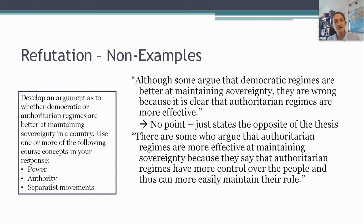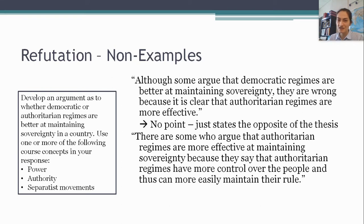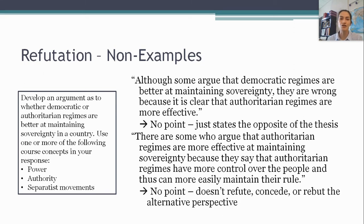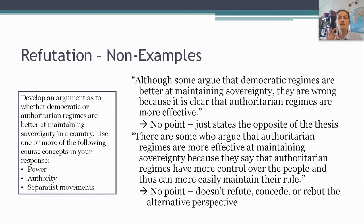Second, I might write: 'There are some who argue that authoritarian regimes are more effective at maintaining sovereignty because they have more control over the people and thus can more easily maintain their role.' This is better than the previous example because it doesn't just say 'some might disagree' — it says 'some might disagree and here's why.' However, it doesn't do the second thing, which is to actually respond to that alternative perspective. It neither says 'actually, that's a fair point,' nor does it say 'no, this point is short-sighted, or limited, or doesn't outweigh the argument I've made.' So it's not enough to just describe what a reasonable person who disagrees might say — you also have to respond to that perspective.